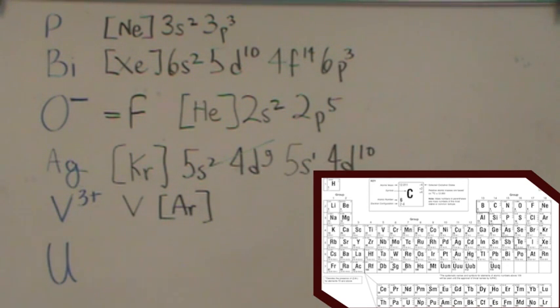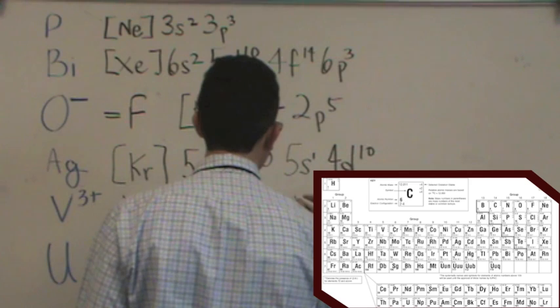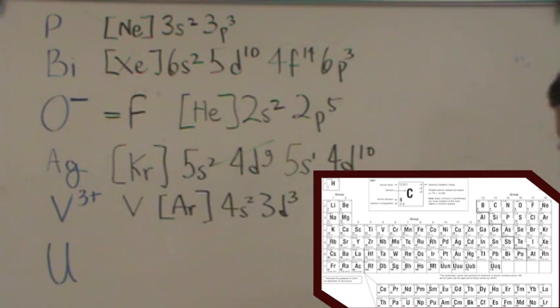So we got argon. And then we go to potassium and calcium. That's the 4S2. And then we're in the 3D. We count over 3. So it's 3D3. So there's vanadium neutral.